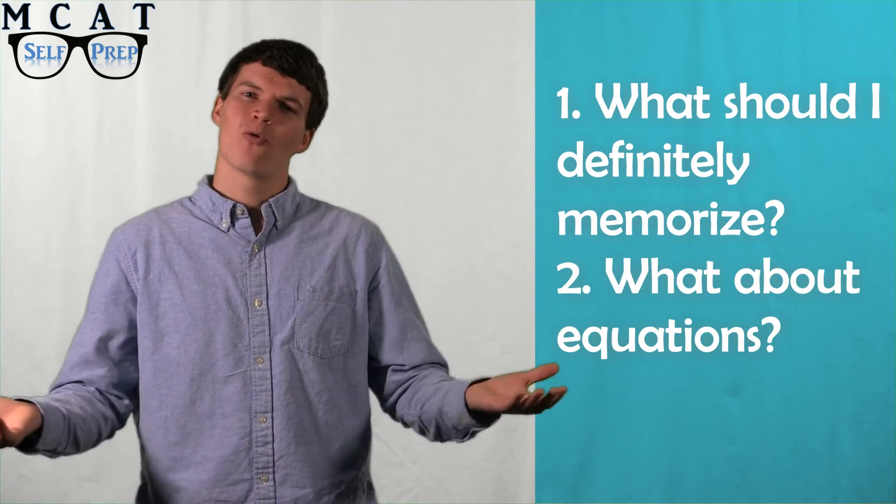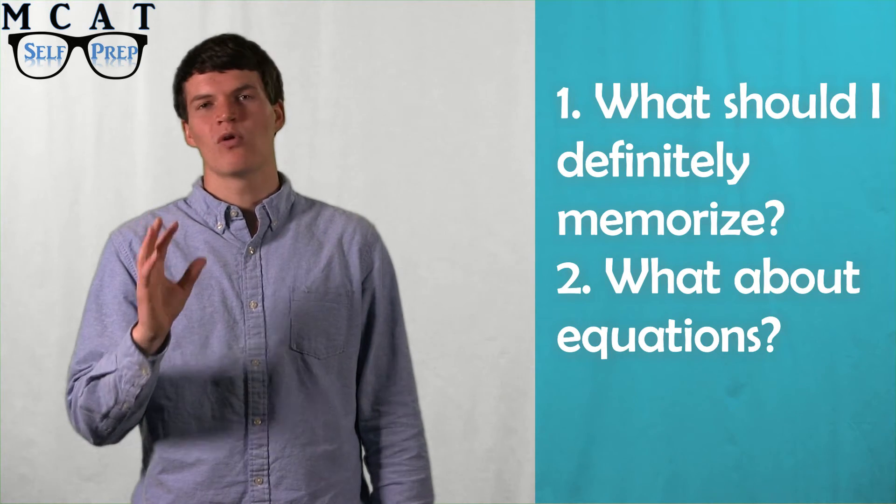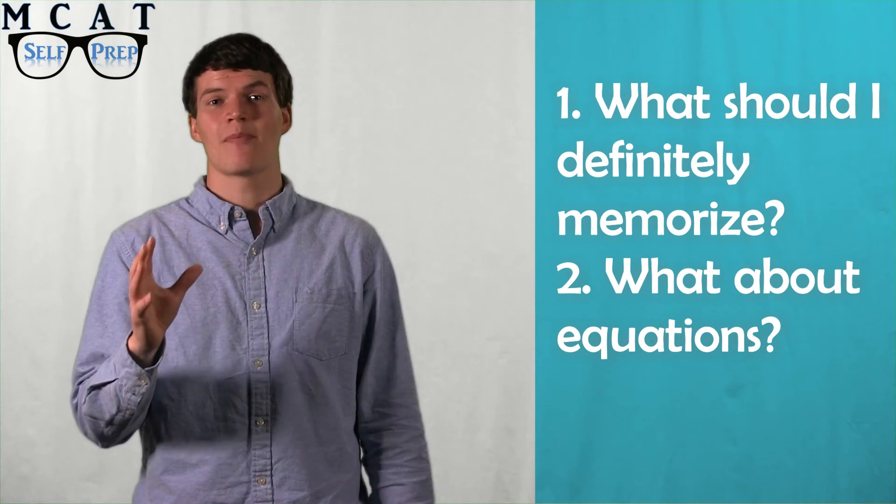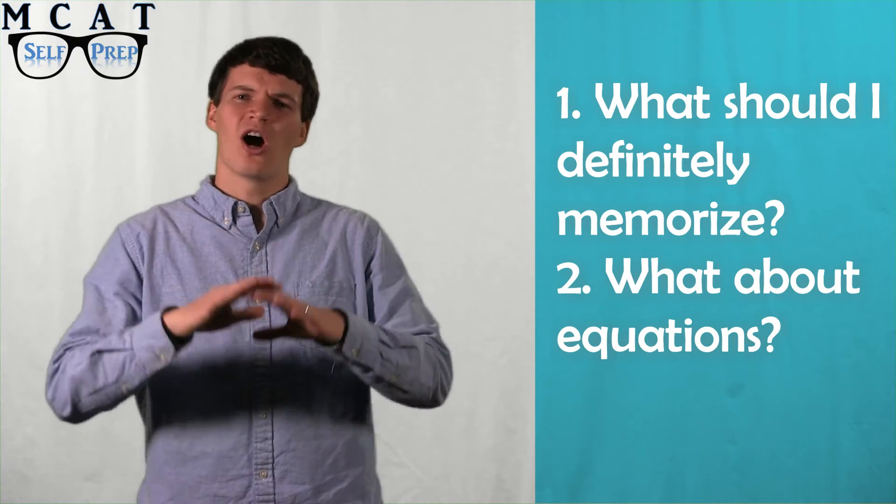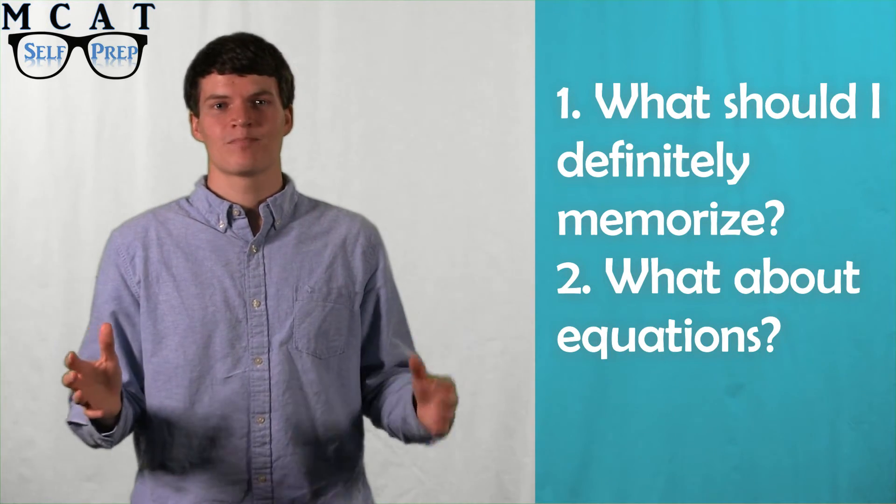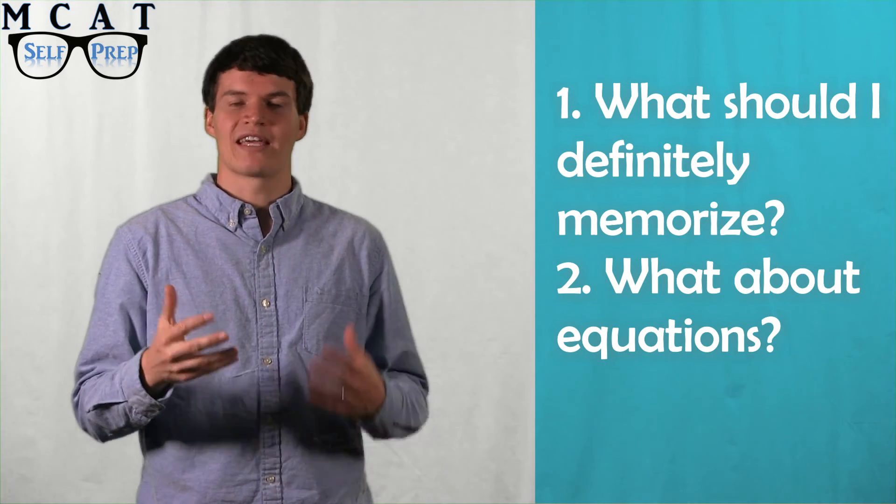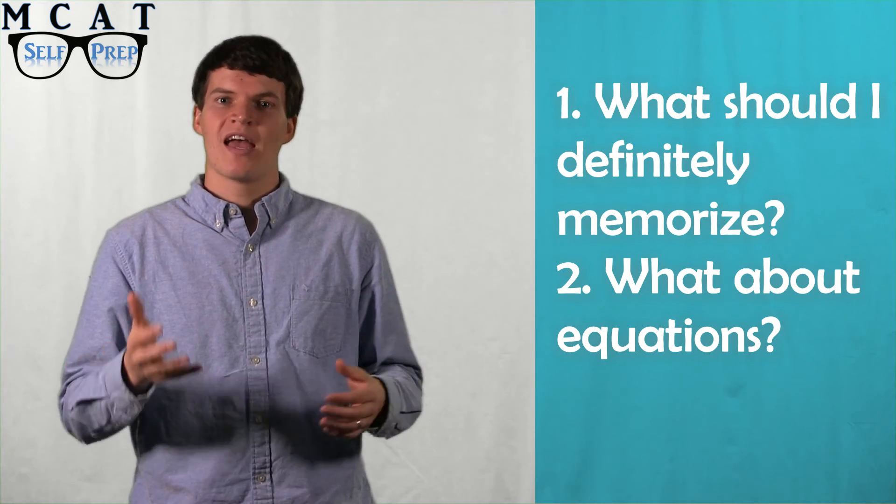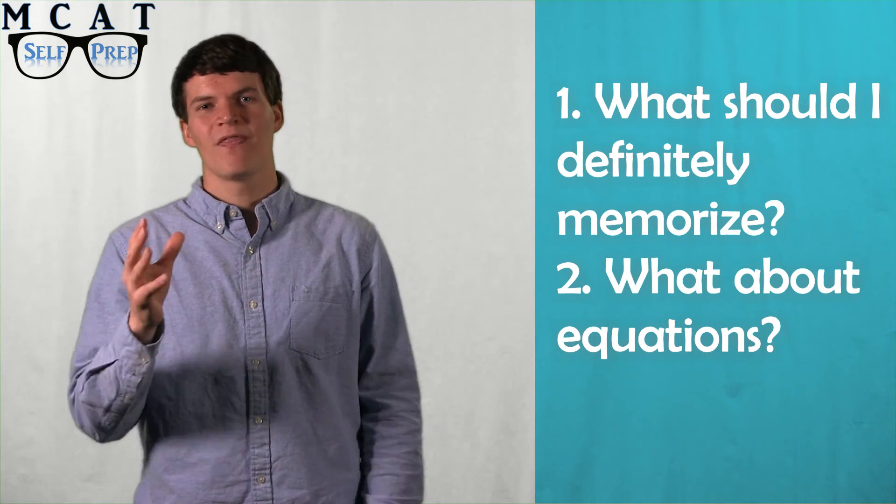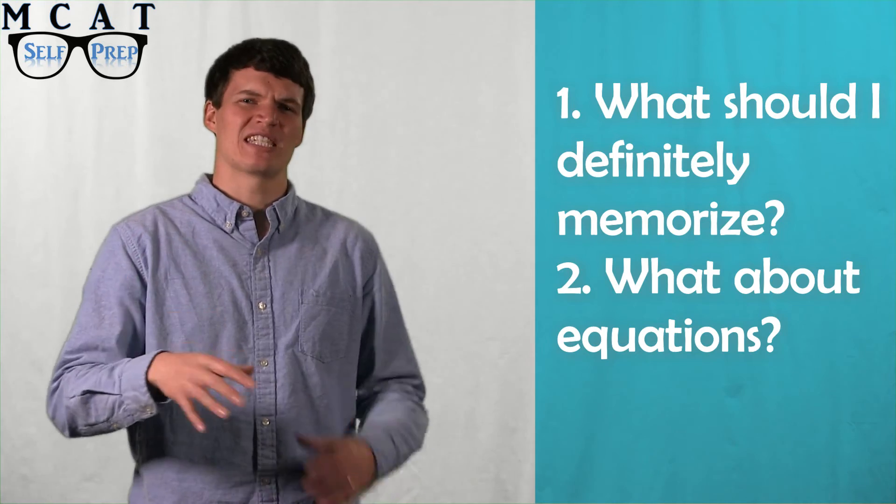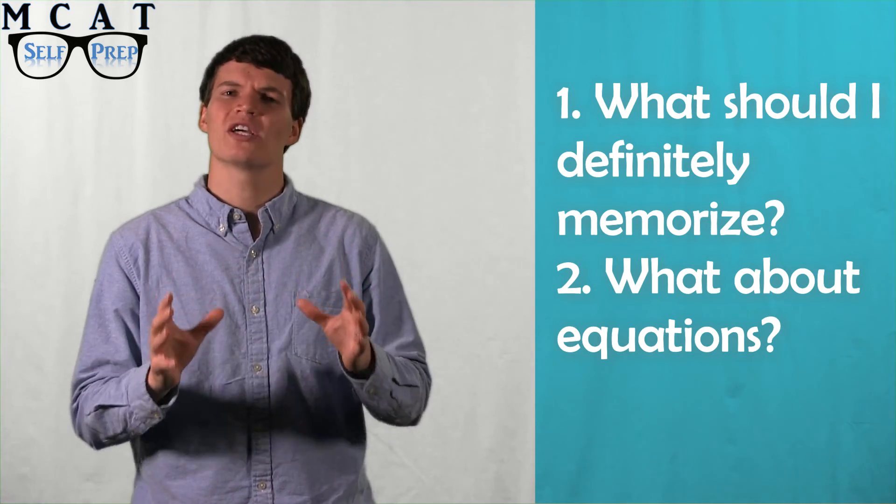Now, what about equations? Should you memorize all of those too? One of the major regrets of many top MCAT scorers is that they spent too much time trying to memorize a large amount of detailed equations. A good rule of thumb is to memorize the simple equations, like F equals MA, and to simply understand the long, difficult ones. This will allow you to spend less time memorizing convoluted equations and more time working on truly understanding the material.